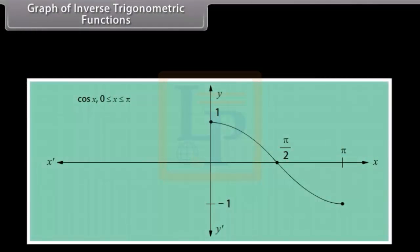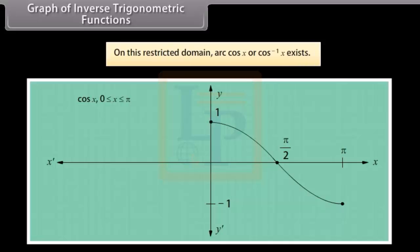The derivations of the graphs of arc cos x and arc tan x are similar to that of arc sin x. In both instances, intervals must be restricted. For arc cos x, we use the interval where cos x is one-to-one, and on this restricted domain, arc cos x (cos⁻¹x) exists.